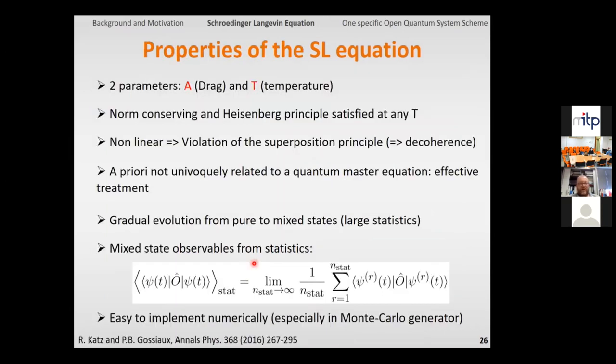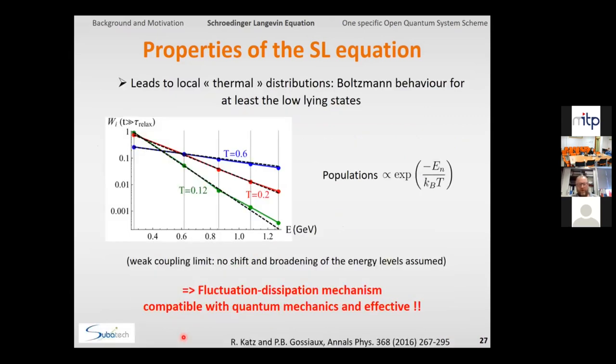So this Schrodinger-Langevin has a couple of nice properties, it is norm-conserving, it's still nevertheless effective treatment, cannot be derived from a genuine quantum master equation, but what is nice, it's kind of relatively easy to implement numerically on the computer, especially in some kind of Monte Carlo generators, and on the top you can show, as we have done here in this publication, that after a late time you reach some approximate Boltzmann statistical distribution, which is really important for this kind of equation.